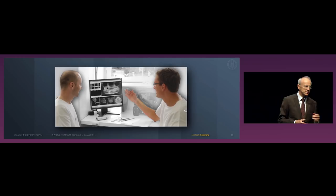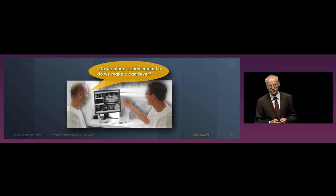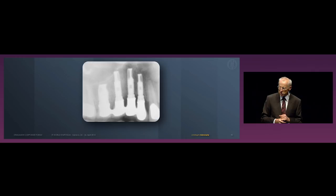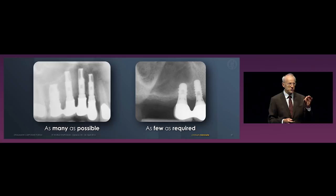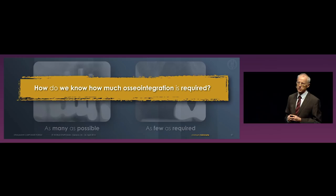Let's go to a clinical situation. Two colleagues discuss: do we place a short implant or do we make a cantilever? And the other one immediately thinks: overloading. So traditionally we've been placing implants as many as possible. Today, I think, we go for placing as few as required. But the question is, how do we know what is really required? Or how do we know how much osseointegration we need?